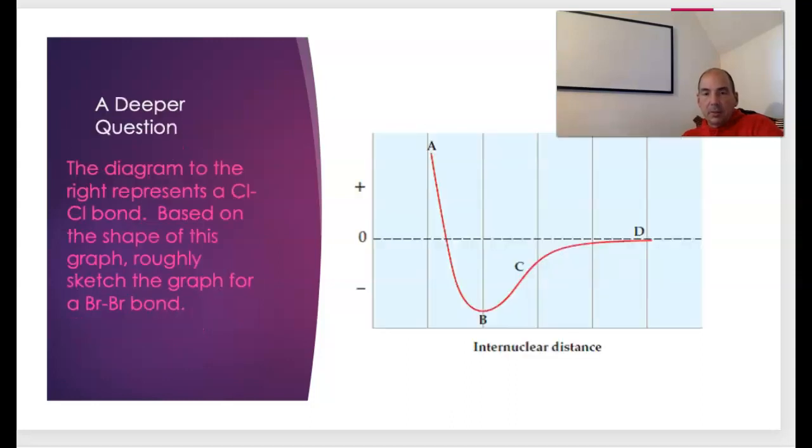This is from a past AP exam, a little modified. So we're told that this graph here represents a chlorine-chlorine bond. Based on the shape of this graph, sketch the graph for a bromine-bromine bond. So we have to understand a couple things. First off, sizes. So if you compare chlorine and bromine, which one is the bigger atom? And bromine is the bigger one. So that means when we talk about the bond length, we expect the bromine-bromine bond to be bigger. So I know that the curve, which is marked by point B, would have to be out further to the right. It's got to have a bigger internuclear distance. So we know the curve has to be to the right.